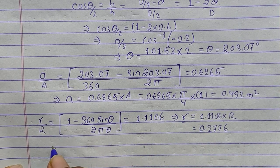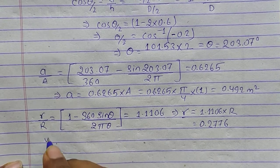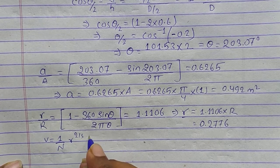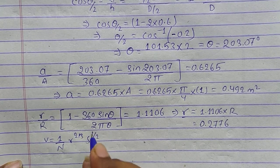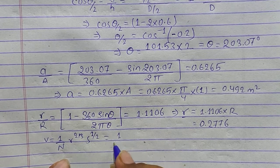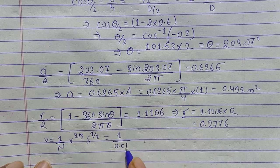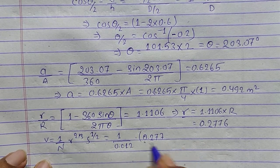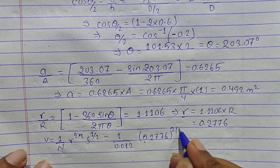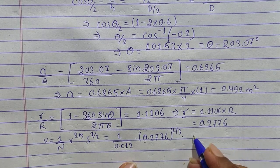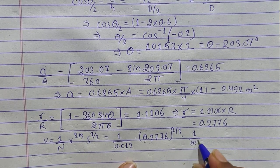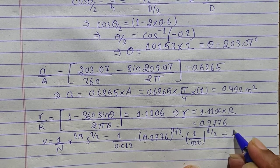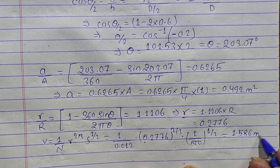Now substitute into Manning's formula: V = (1/n) × r^(2/3) × S^(1/2) = (1/0.012) × (0.2776)^(2/3) × (1/500)^(1/2). Solving this gives V = 1.586 meters per second.